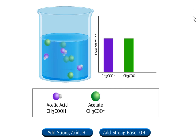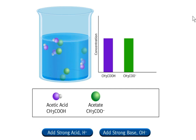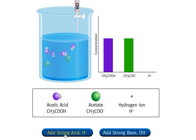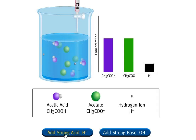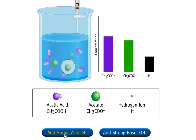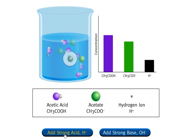...containing both a weak acid and a weak base that are a conjugate acid-base pair. Only hydrogen ions, H+, from the hydrochloric acid are shown entering the solution. Chloride is not shown because it is a spectator ion.